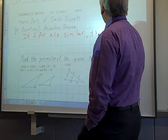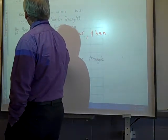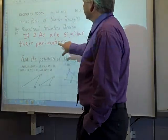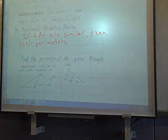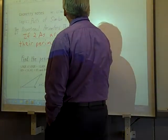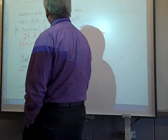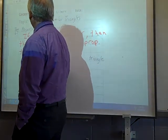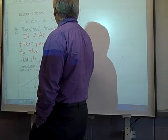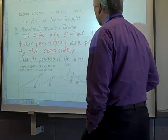It says if two triangles are similar, then their perimeters are proportional to the corresponding sides.